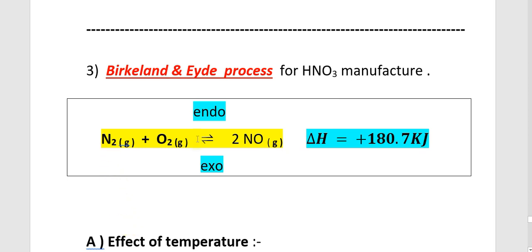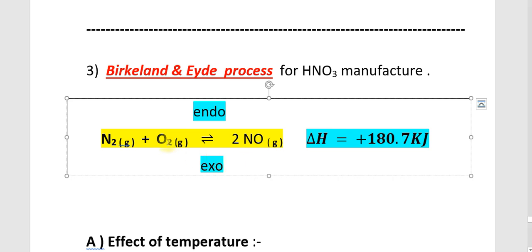An important difference in this reaction compared to the others: the number of moles of reactants and products are equal — 1N2 plus 1O2 gives 2NO, meaning 2 moles of reactants give 2 moles of product. Since the number of moles in reactants and products are the same, pressure has no effect on this equilibrium.